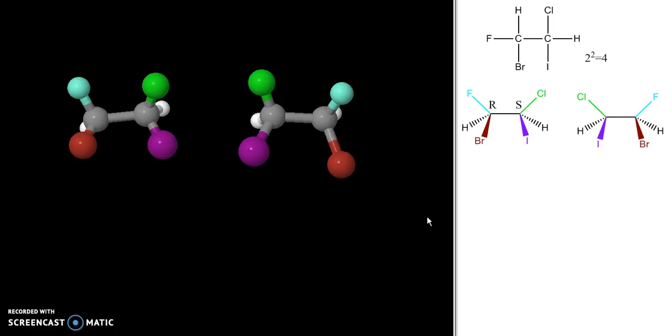The reason I wanted to go through that is because it helps us assign the stereocenters over here. When I switch the position of two groups like I did over here, I switch the stereochemistry. So since this was S, this is R. And likewise, since this one was R, its mirror image is S. So those are my first two stereoisomers.